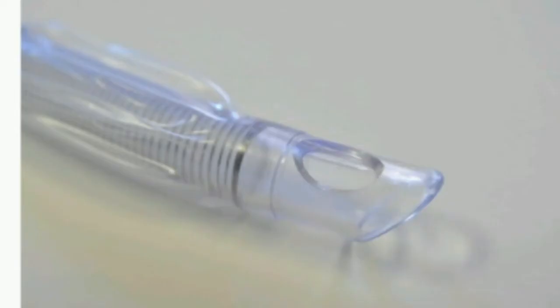Just like standard ET tubes, armored or reinforced tubes have the typical left-facing bevel at the tip and the Murphy eye. Their distinct feature is a metal wire coil embedded in the wall of the tube shaft which keeps the lumen of the tube open when it is bent.